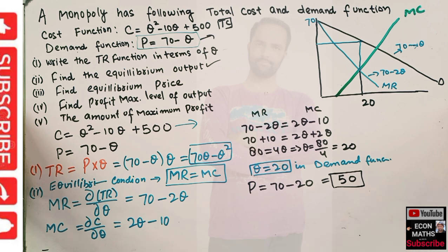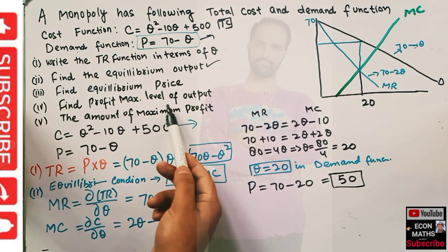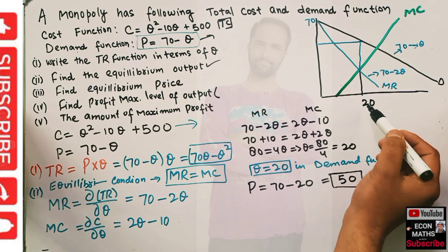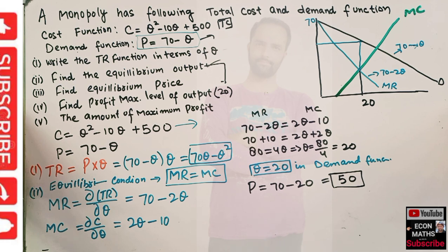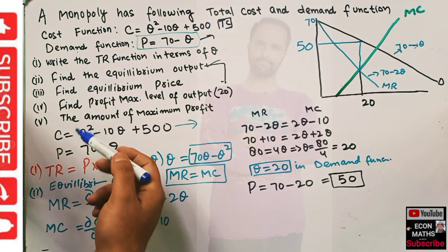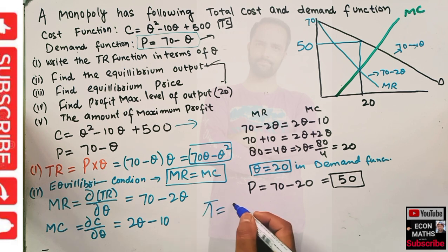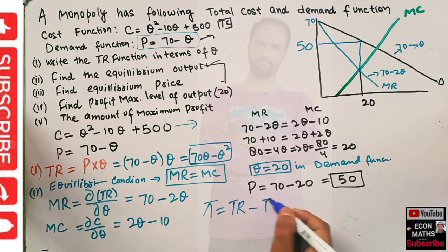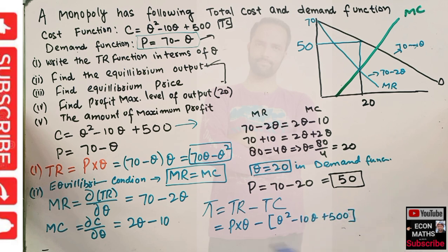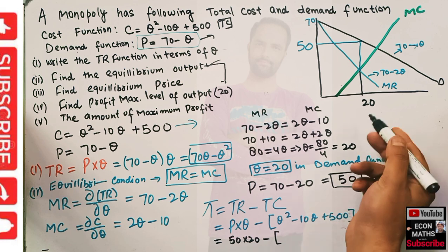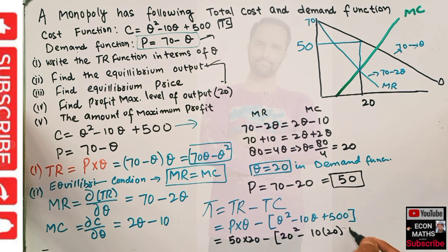The profit maximizing level of output is also equal to 20, because equilibrium output and profit maximizing output are the same in the case of monopoly. Equilibrium price is 50. Now for the amount of maximum profit: profit equals total revenue minus total cost. Total revenue is price into quantity, which is 50 into 20. Total cost is q squared minus 10q plus 500, and plugging in q equals 20 gives 20 squared minus 10 times 20 plus 500.